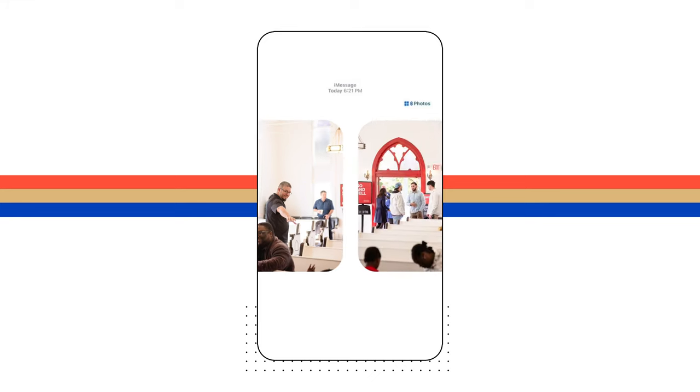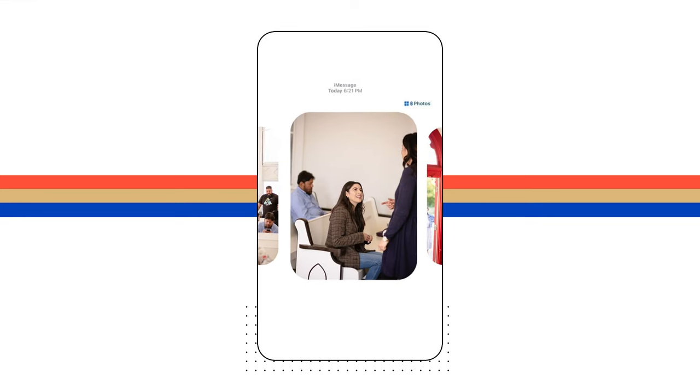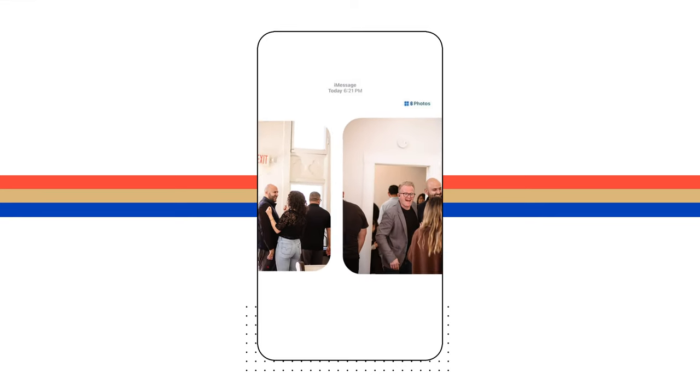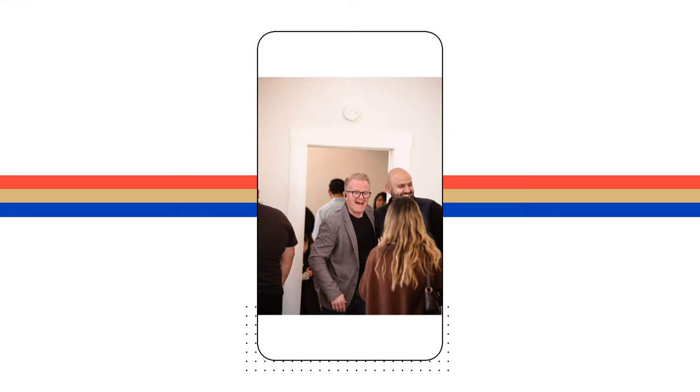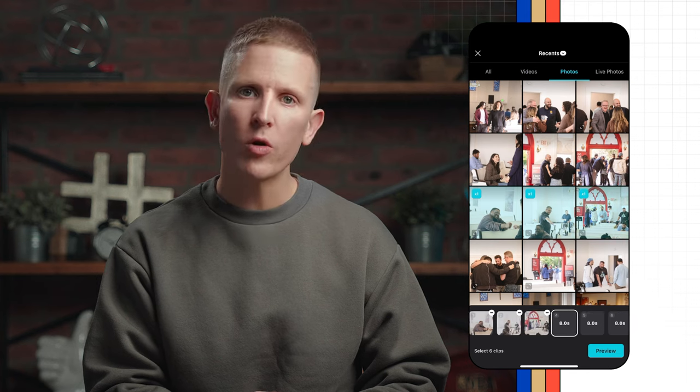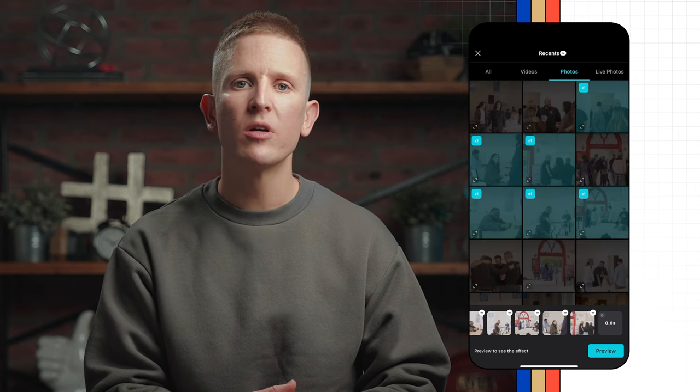Next up, let's create another encouragement style portrait. For this template when I'm choosing images, I like to choose photos of church life and community rather than worship like in the last post, because those kinds of images align better with the sound and its message. We need just six photos for this post. I'll load them up, preview, export, and we're done.